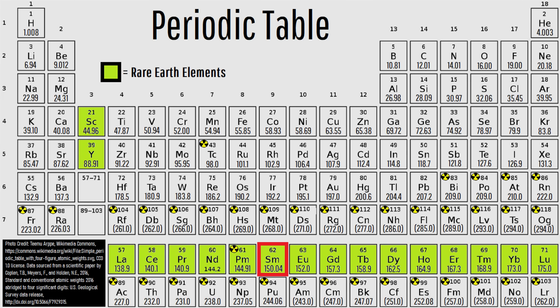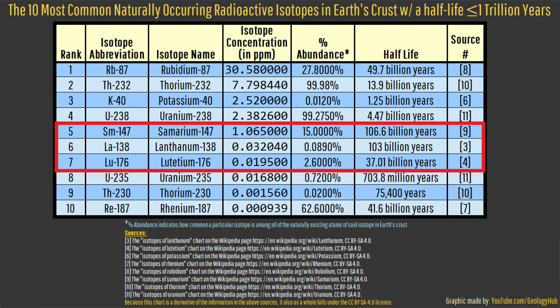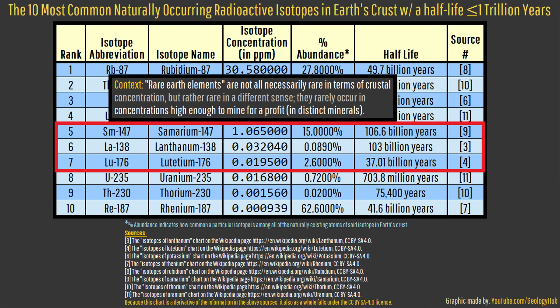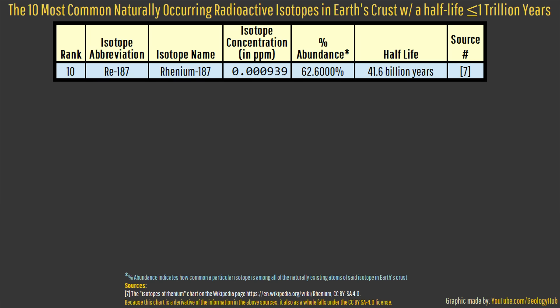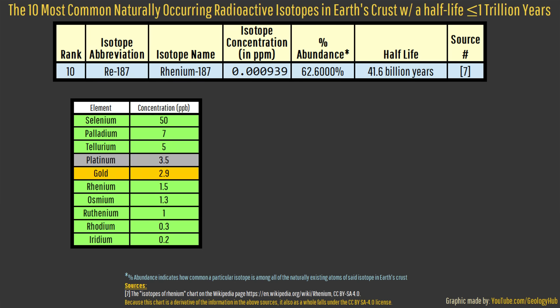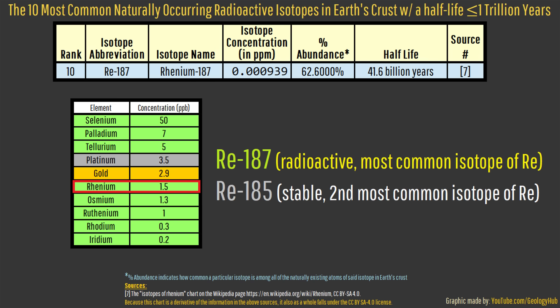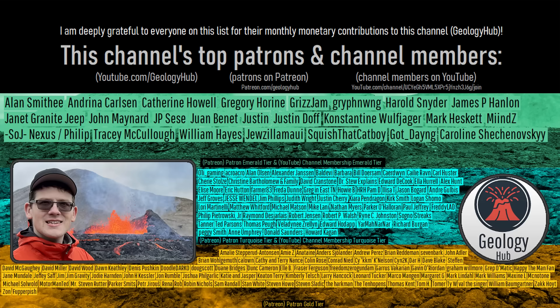In spots five, six, and seven, we have three isotopes of three different rare earth elements, meaning they only rarely occur in concentrations high enough to be detectable. Lastly, in tenth, we have uranium-187, which is the most common isotope of Earth's fifth rarest element that also has at least one stable isotope.